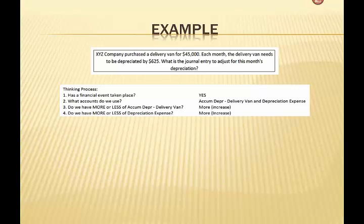Let's walk through our thinking process. Has a financial event taken place? Yes, it has. What accounts do we use? We will use an account called accumulated depreciation — I've abbreviated that here on the screen — accumulated depreciation for our delivery van. A company can have lots of these for different types of assets they have. And the other account is depreciation expense. Do we have more or less accumulated depreciation on our delivery van? We have more. And do we have more or less of depreciation expense? We have more.